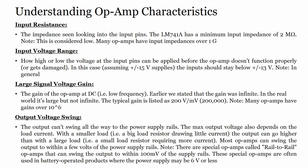Let us see some more parameters and characteristics. Input impedance — the impedance looking into the input pins. LM741 has a minimum input impedance of 2 megaohms. This is considered low; many op-amps have impedance over 1 gigaohm.